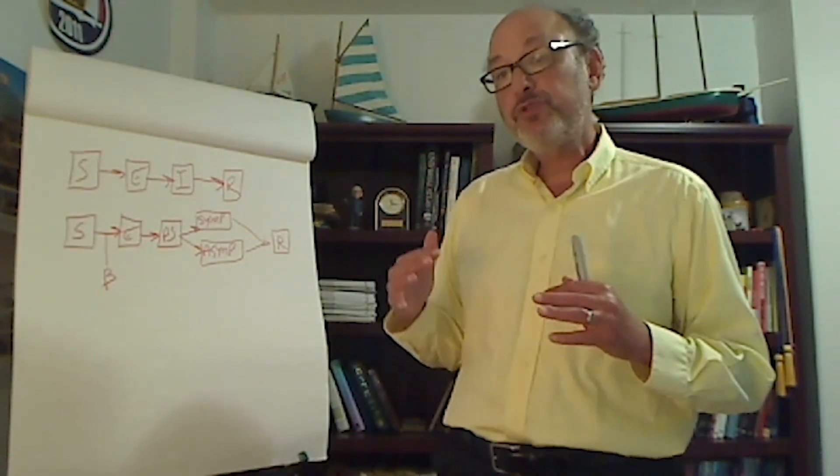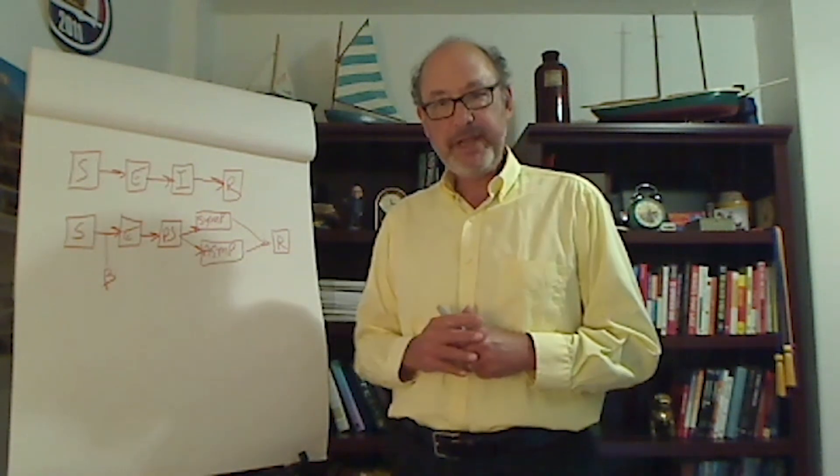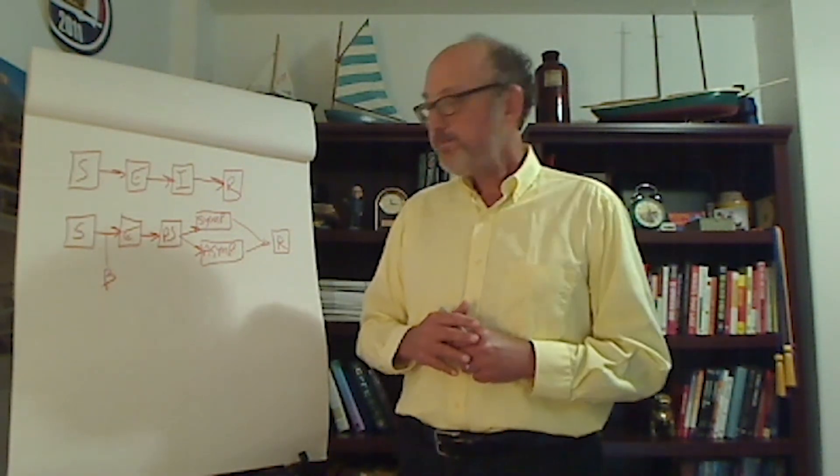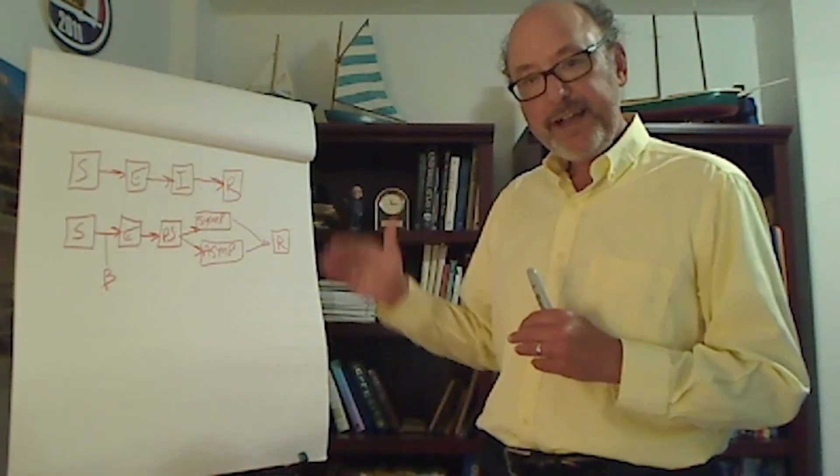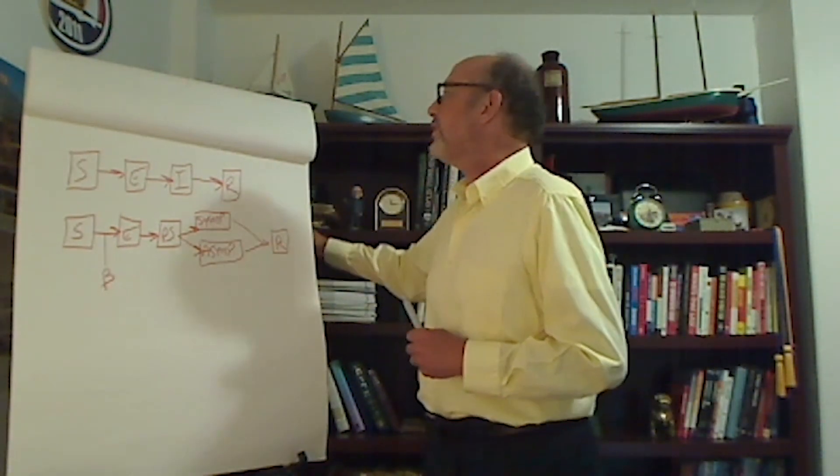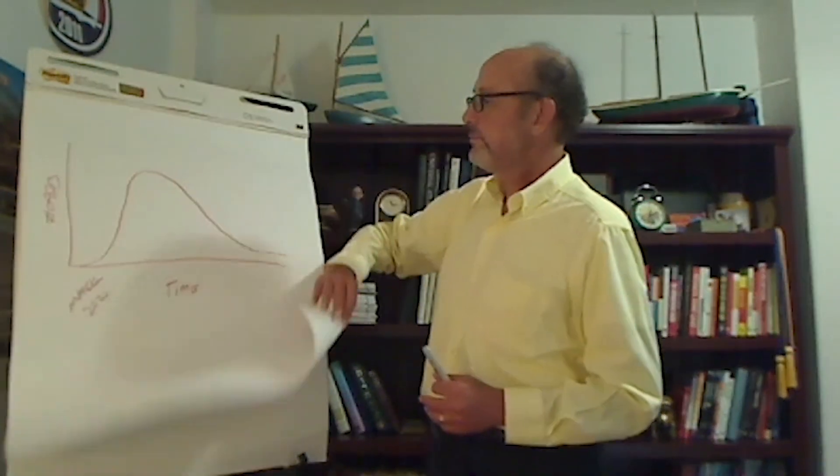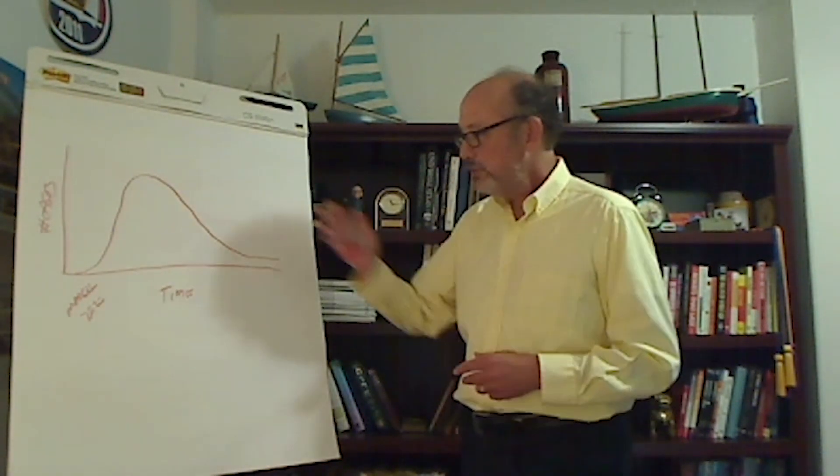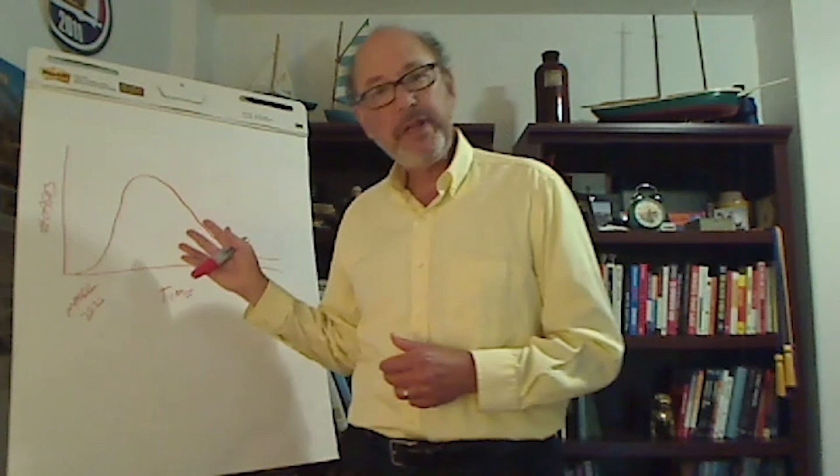So beta turns out to be one of the key parameters to this. And the question, one of the questions we're trying to answer is, what affects beta? And how does that then affect the curve? So now let's go back and say, what did we learn? Okay, so here's the curve of what we saw. What explains this?